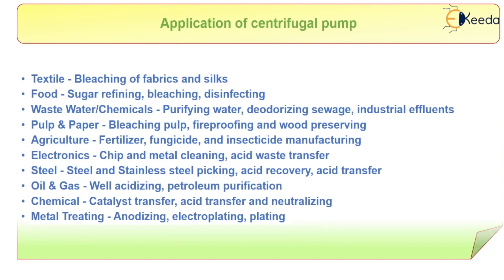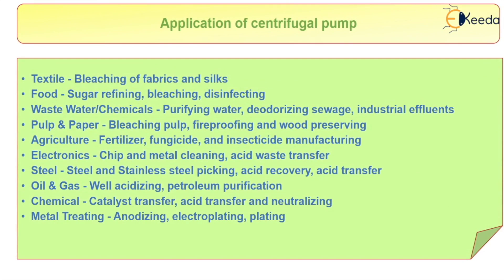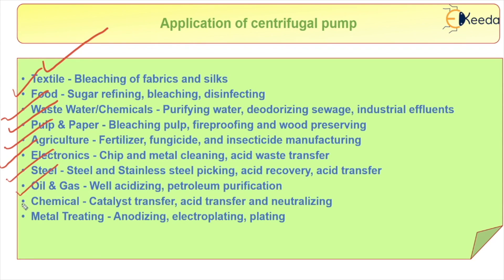The applications of centrifugal pumps are as follows. It is used in textile, food, waste water, chemicals, pulp, agriculture, electronics, steel, oil and gas, chemical, and metallurgy industries. These are the areas in which the centrifugal pump is widely used.